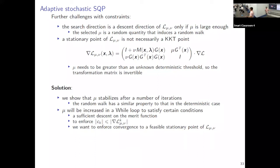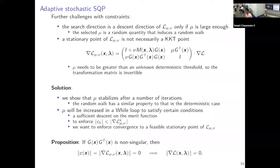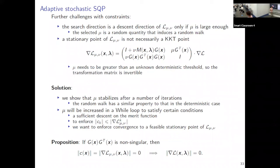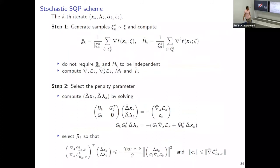This condition allows us to prove things and works reasonably well in simulations. If this matrix is non-singular, then the gradient of the augmented Lagrangian being zero implies a feasible stationary point. So the algorithm design ensures convergence not to just any stationary point of the augmented Lagrangian, but to a feasible stationary point. Let me now explain the four steps of the algorithm.